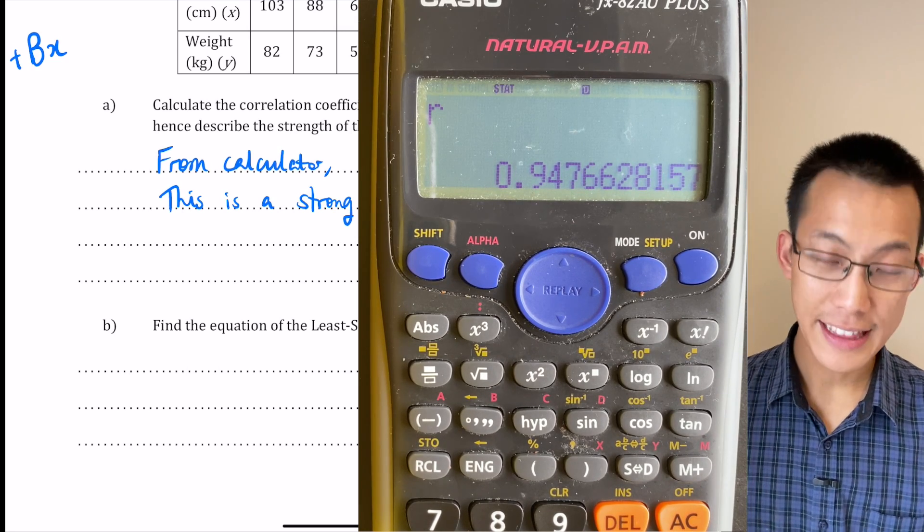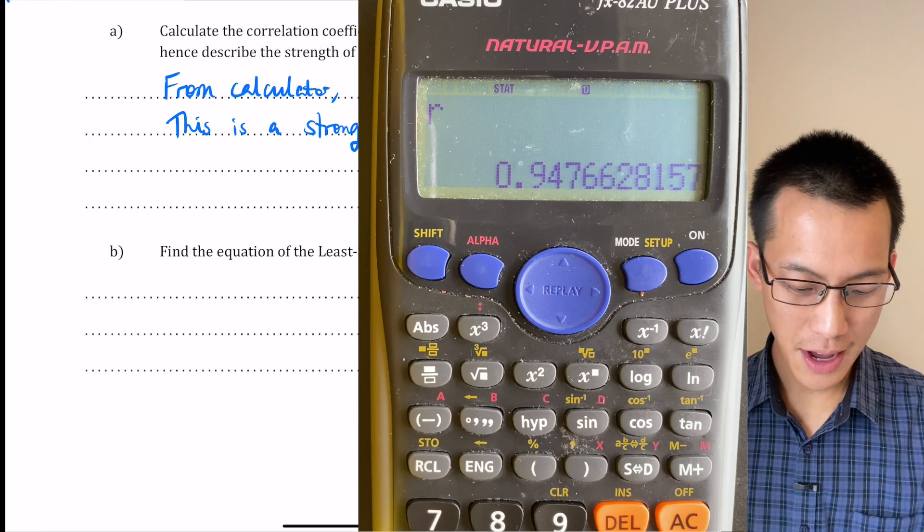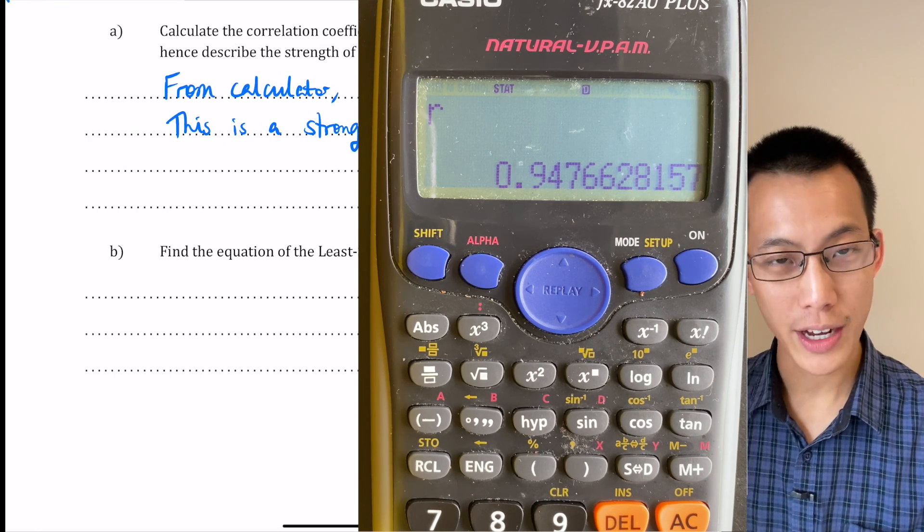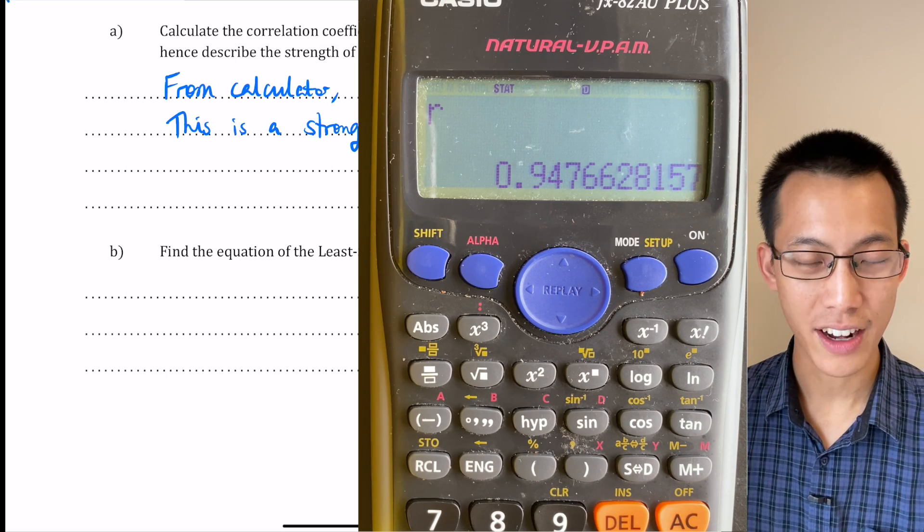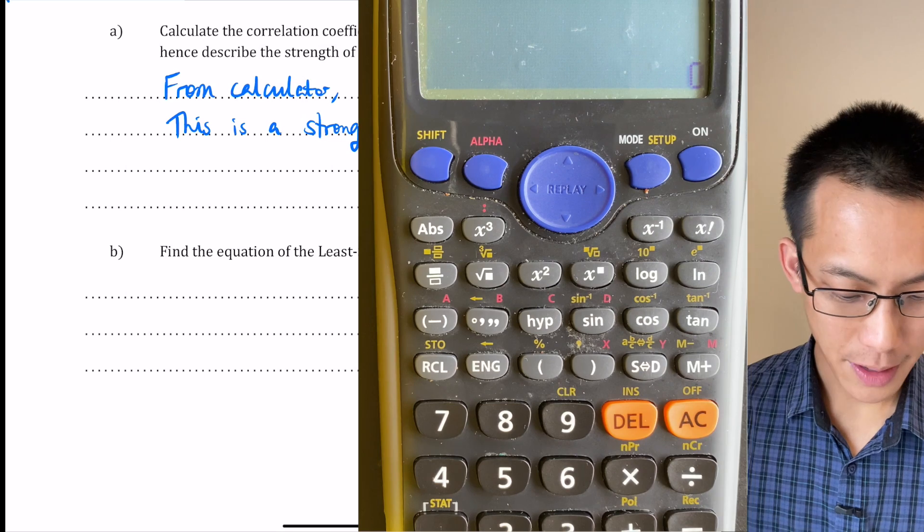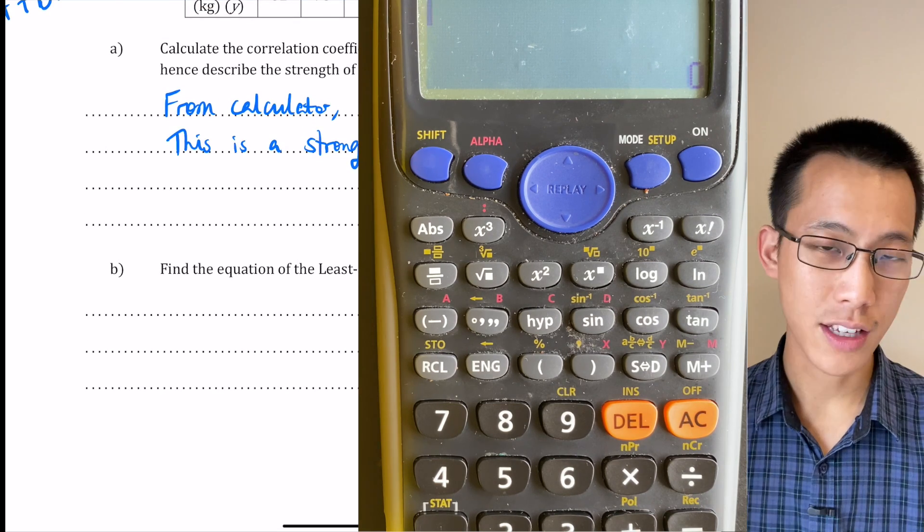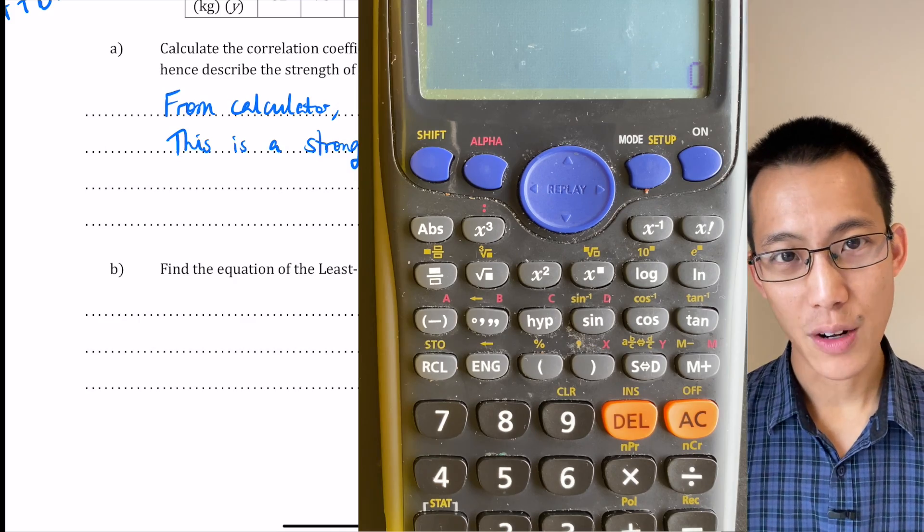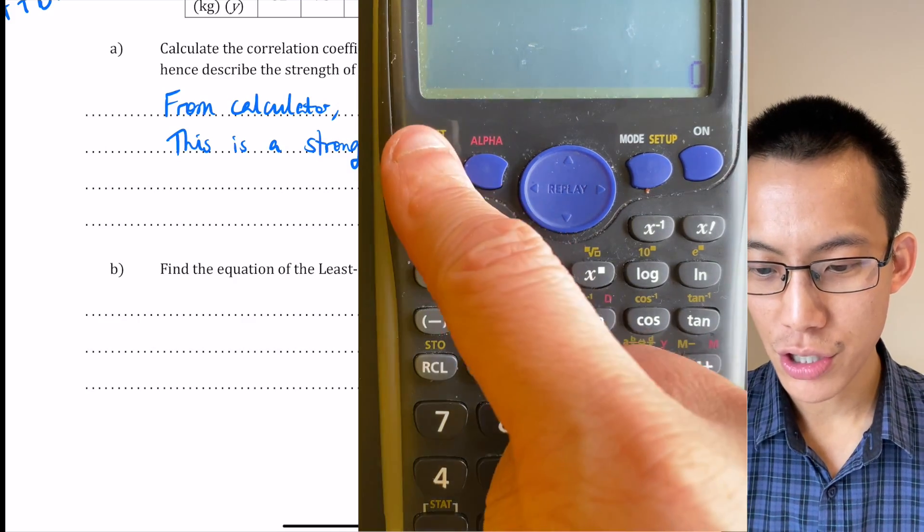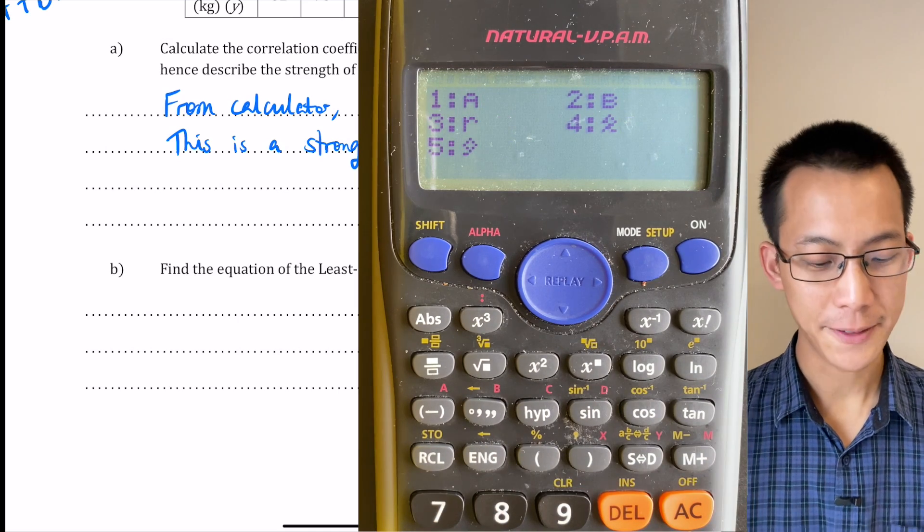Find the equation of the least squares regression line. That's what part B is asking for. Now again we've actually done all the hard work entering that data into the calculator. We just need to go back to it. So let's just get it here. I'm going to clear this out. Now to get to the equation of the least squares regression line we need two things. We need a gradient of the line then we need a y-intercept. So when you go to shift one to bring up these options here I'm going to go back to five for reg again.